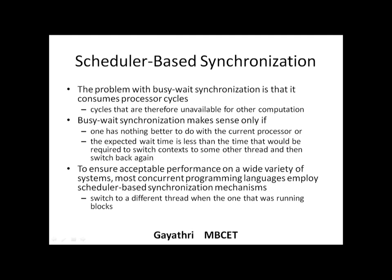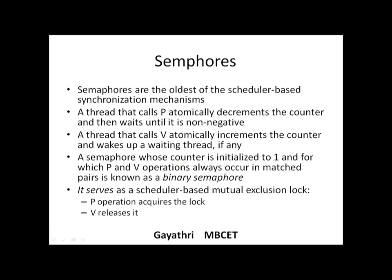Another synchronization method is semaphores — the oldest method of scheduler-based synchronization. A thread can make two calls: P, which atomically decrements the counter and waits until it is non-negative; and V, which increments the counter and wakes up a waiting thread. A semaphore whose counter is initialized to 1 and for which P and V occur in matched pairs is called a binary semaphore, which works like a lock — P acquires it by decrementing, V releases it by incrementing.